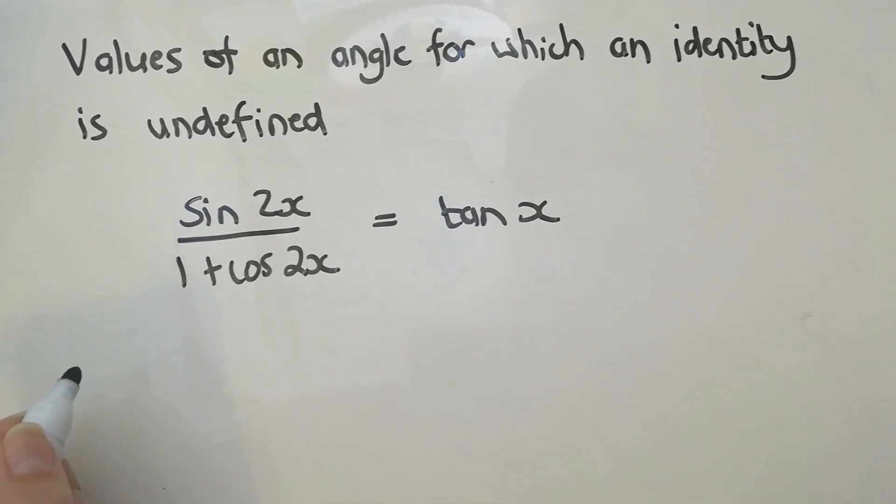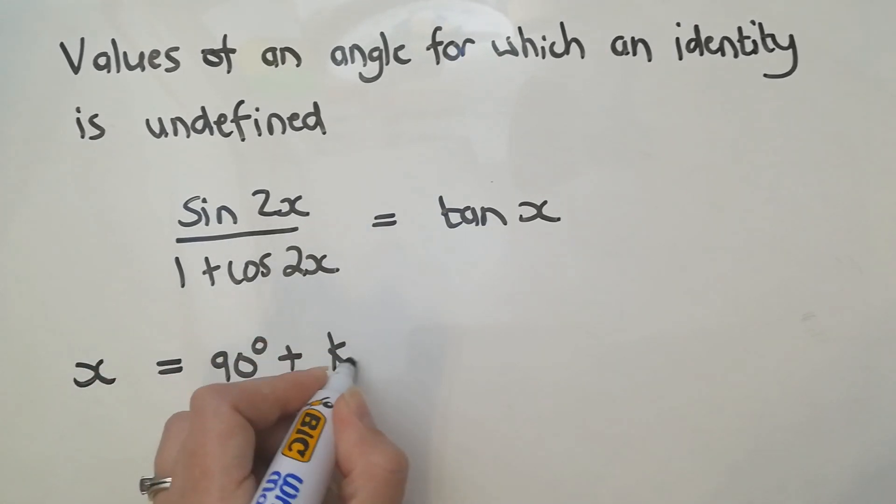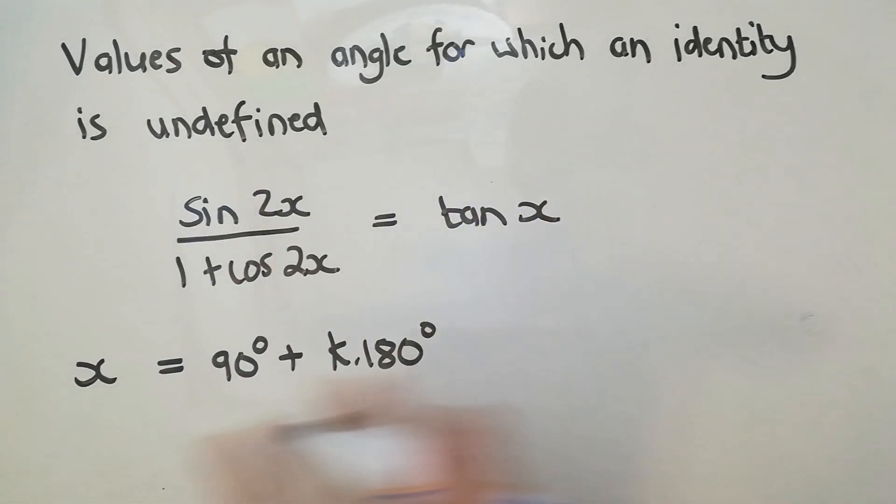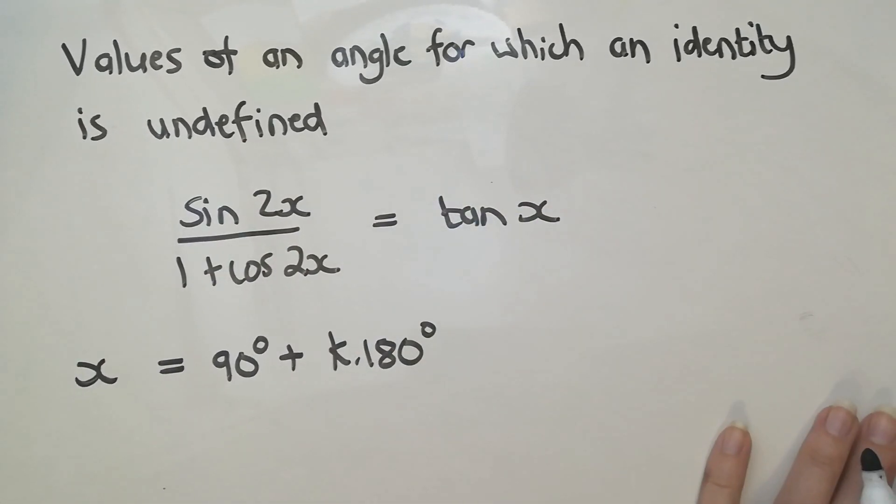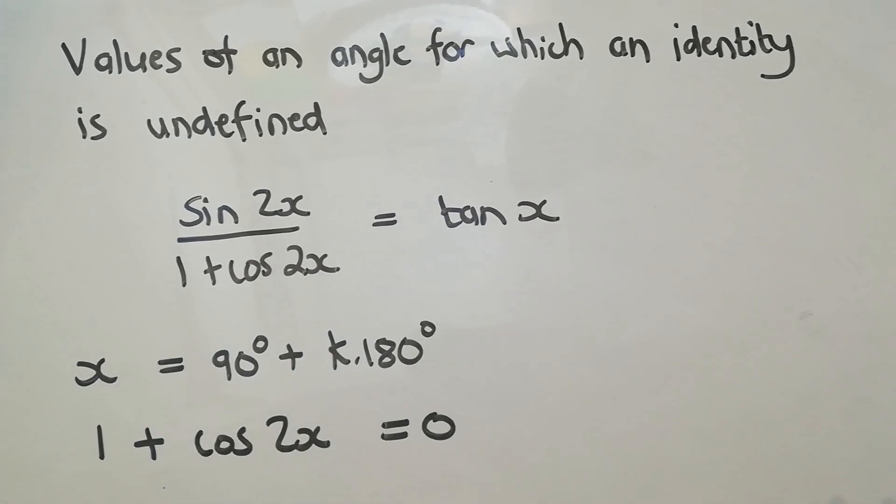So my first answer to this question is for when x is equal to 90 degrees plus k180. So that is my answer for when this whole thing might not be valid. So if that's the case, the other one I want to look at is the denominator. So I want to say, well, when the denominator equals 0, I've obviously got something that's undefined.